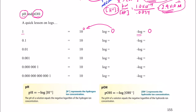Let's do another one. How about 0.1? Isn't that 10 to the negative first? So the log of that number is simply negative 1. The negative of that log would be 1. Alright, the next one: 0.01. That is equal to 10 to the negative second. So the log of 0.01 is simply negative 2. The negative of that log is 2.